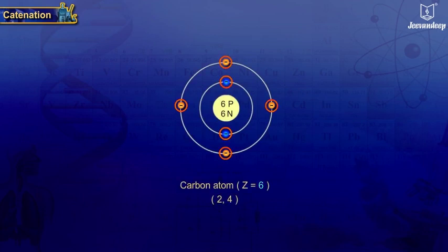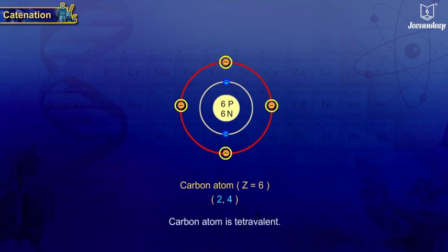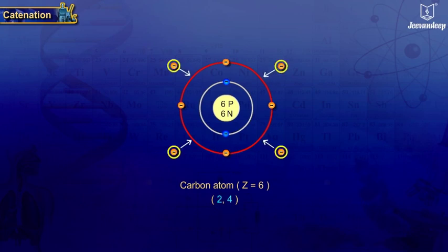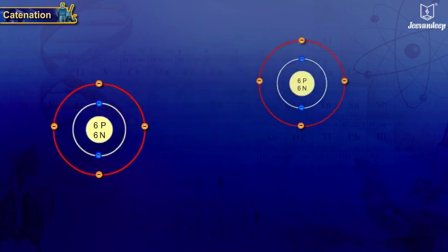The electronic configuration of carbon is 2,4. Carbon has four electrons in the outermost orbit and hence it is tetravalent. It could gain four electrons or lose four electrons to attain stable electronic configuration. To overcome this, carbon undergoes bonding by sharing its valence electrons.